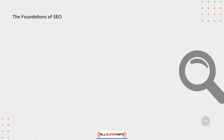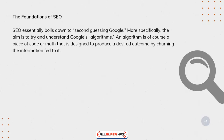SEO essentially boils down to second-guessing Google. More specifically, the aim is to try and understand Google's algorithms. An algorithm is, of course, a piece of code or math that is designed to produce a desired outcome by churning the information fed to it.